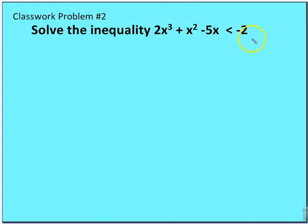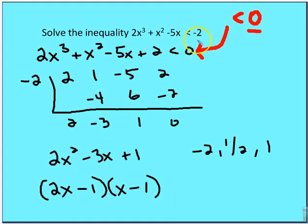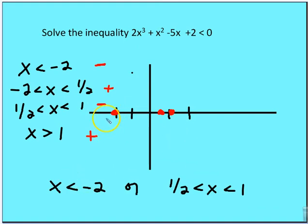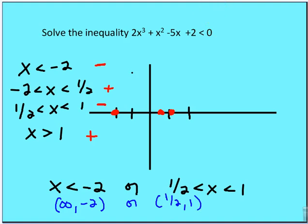Classwork problem number 2: solve the inequality. We need to be careful — we're looking for values less than zero, so we add 2 to both sides first, then factor. We need a polynomial on the left with zero on the right. We find the zeros, plot them on the number line, identify intervals, test them, and the solution is x less than negative 2, or x between one half and 1. In interval notation: (negative infinity, negative 2) union (one half, 1).